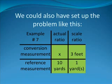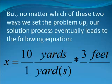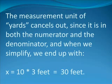Alternately, we could also set up the problem like this. You always have your choice as to whether to use rows or columns for the characteristics compared. Although, in my experience, it seems to work better if the items name the columns and the characteristics name the rows. But either way will work fine. But no matter which of these two ways we set the problem up, our solution process eventually leads to the following equation: X equals ten yards times three feet divided by one yard. The measurement unit of yards cancels out since it is both in the numerator and the denominator. And when we simplify, we end up with x equals ten times three feet equals thirty feet.